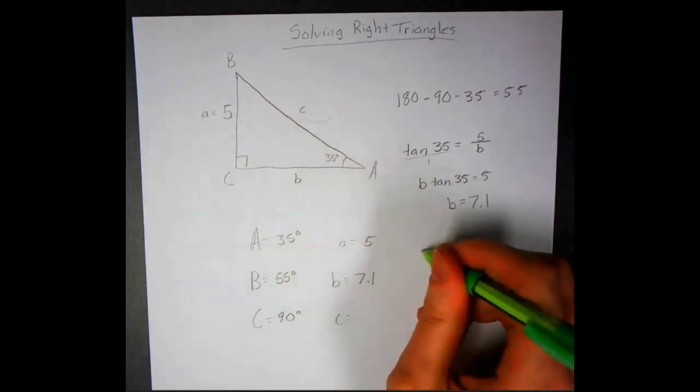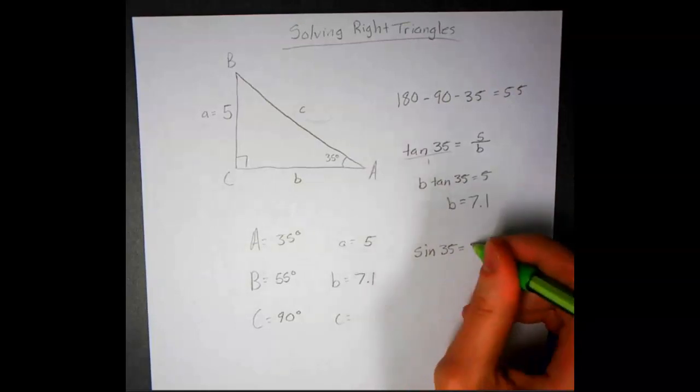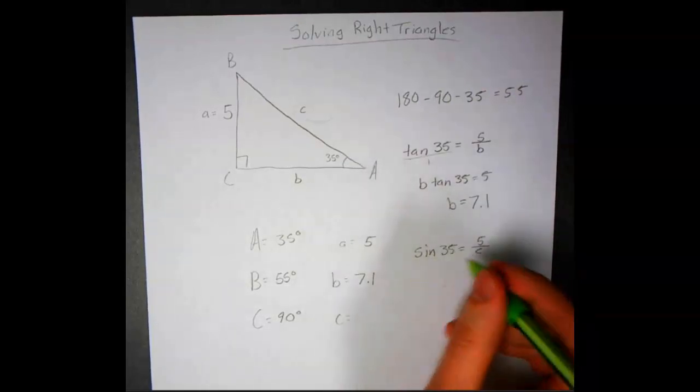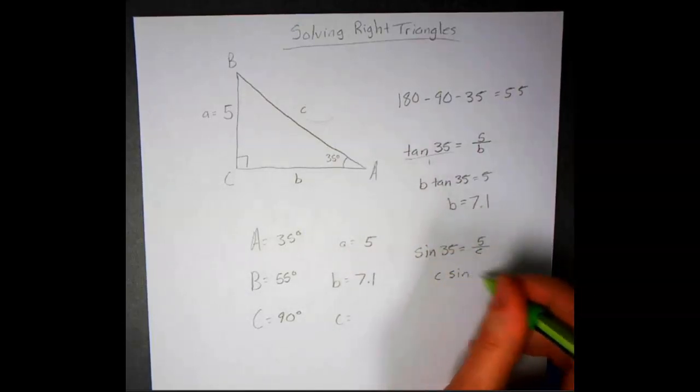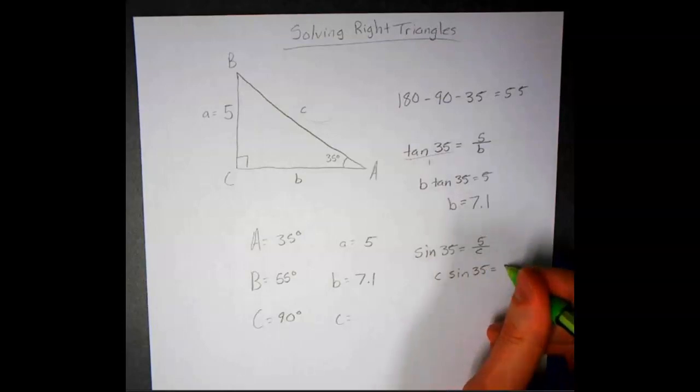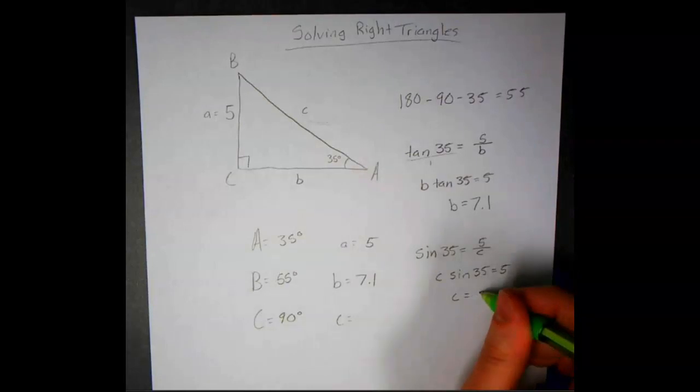If we use sine, we'd say sine of 35 equals 5 over C. We'll do that same cross-multiplication: C sine 35 equals 5. We'll divide by sine 35, and that will equal 8.7.